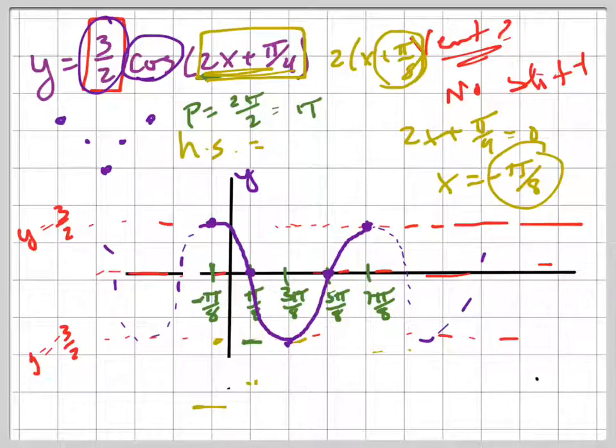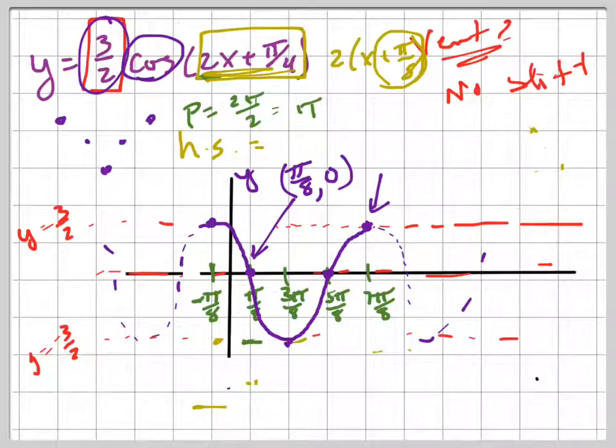And so you should be able to take these points. If they might ask you, what's that point right there? That point is pi over eight comma zero. What's that point right there? That last point on my graph. Seven pi over eight comma three halves, because that's your top.